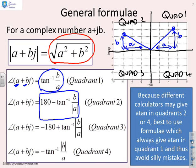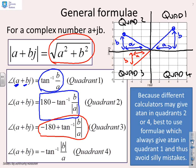In quadrant 3, both b and a are negative. The easiest approach is to use the formula: minus 180 plus tan⁻¹(|b| over |a|). Using the modulus signs ensures a positive number inside the inverse tan, though in this case since both are negative it may not strictly be needed.